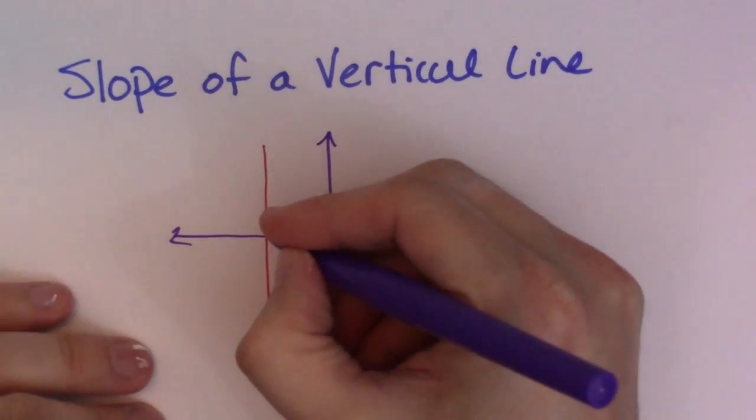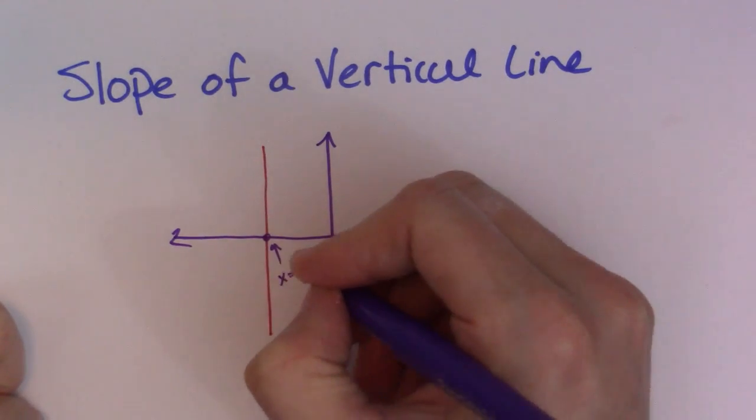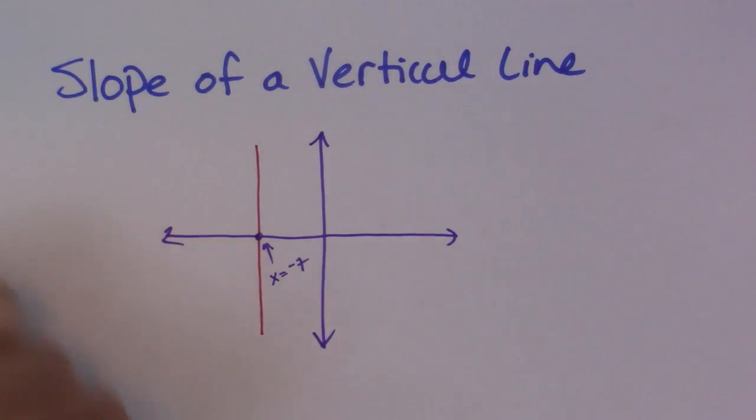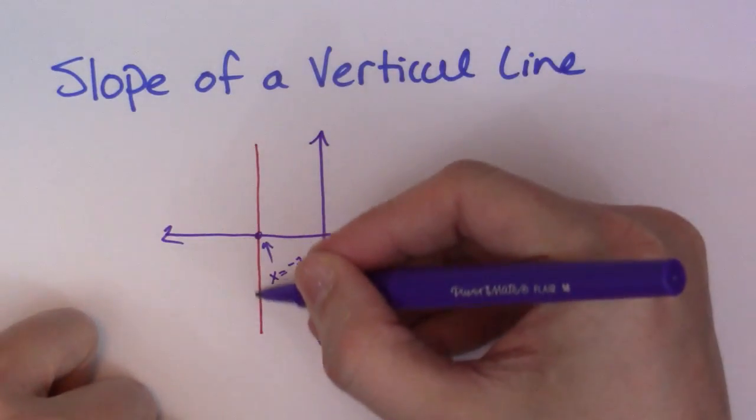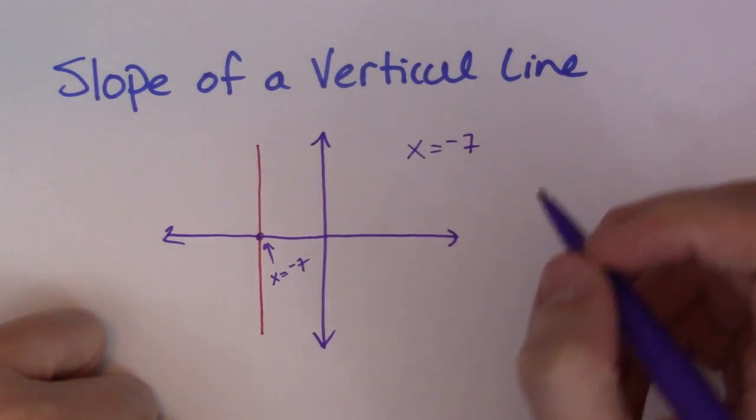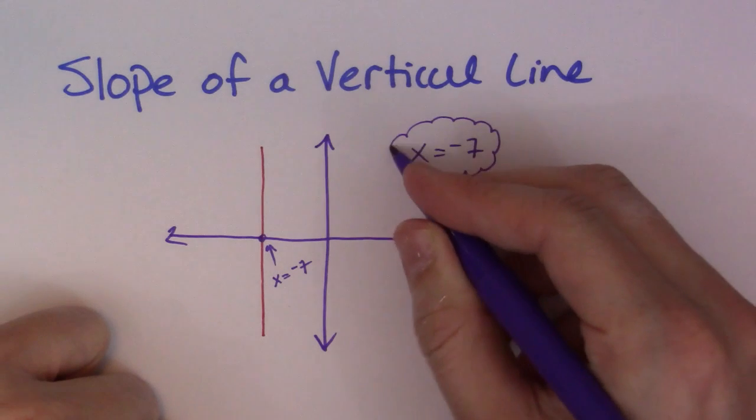You can see it crosses through a point here on the x axis. Let's call that x is equal to negative 7, and that guy always stays x is equal to negative 7. It never changes. So that is actually the equation of that line. If you want the equation of a line, there it is.